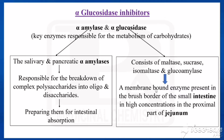Alpha-glucosidase is a membrane-bound enzyme present in the brush border of the small intestine, with high concentrations in the proximal part of the jejunum.